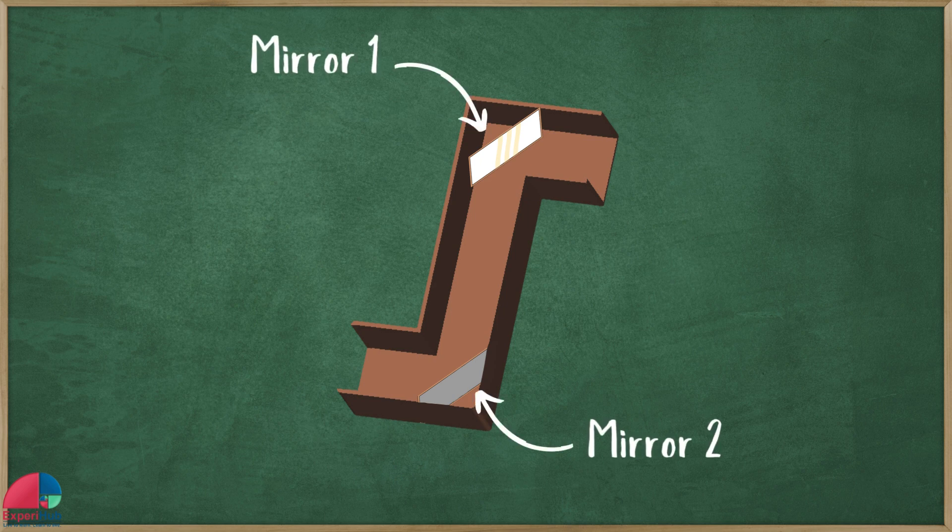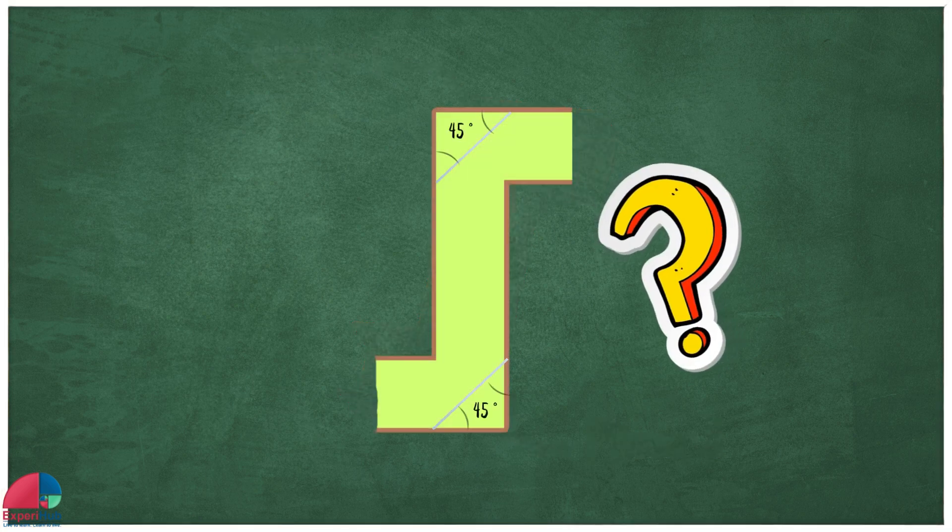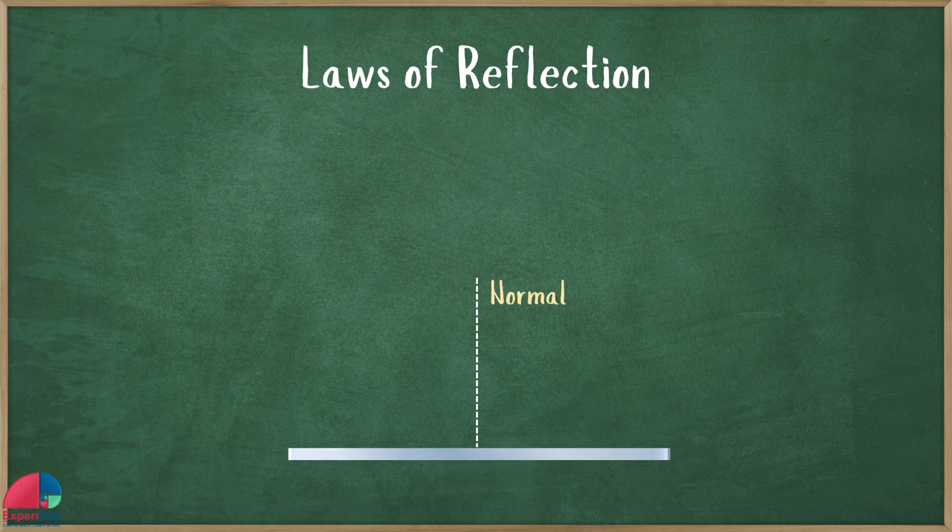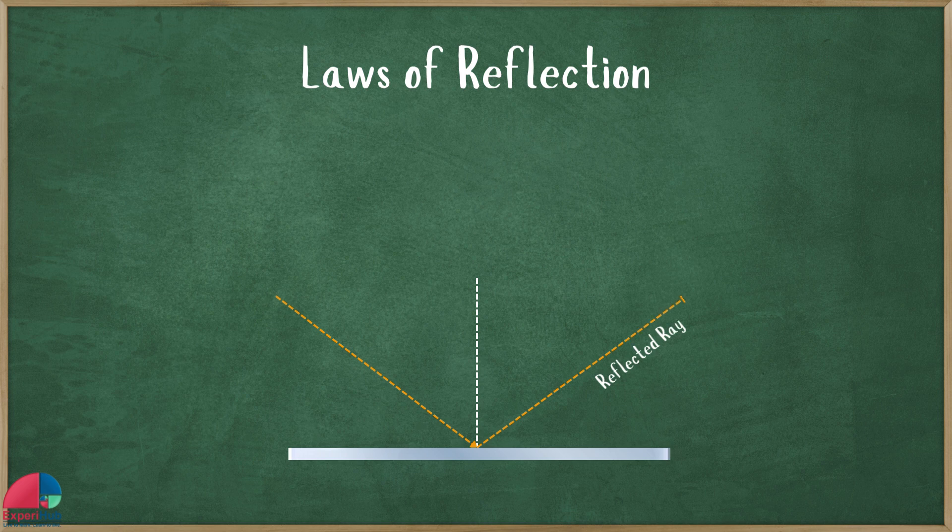To understand why these mirrors are placed at a 45 degree angle, we need to know the basic laws of reflection. There are two main laws. One, the angle of incidence is equal to the angle of reflection. This means that the angle at which the light hits the mirror is the same as the angle at which it reflects away.